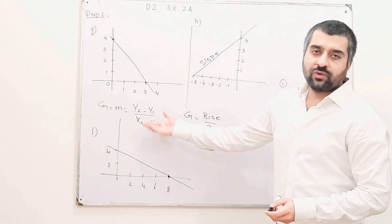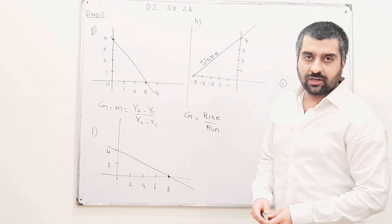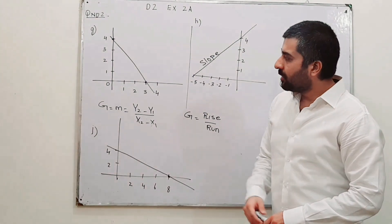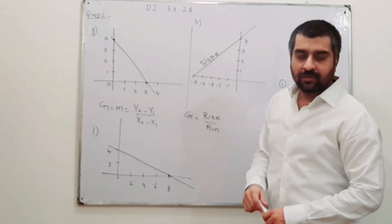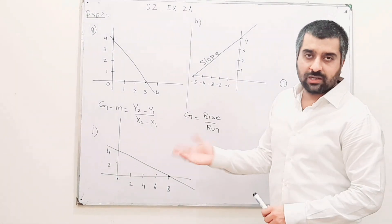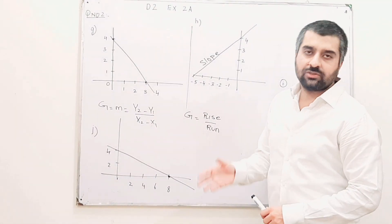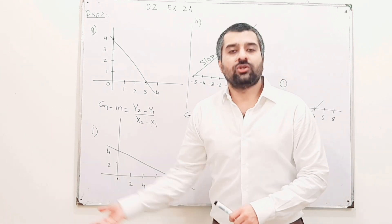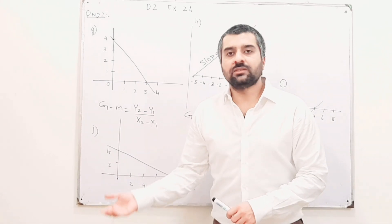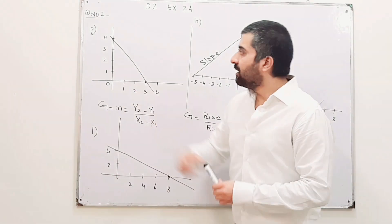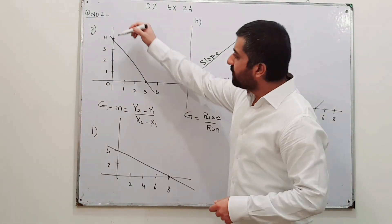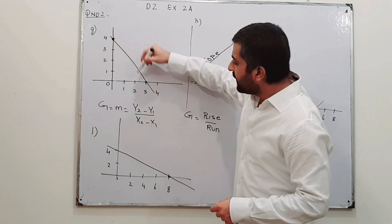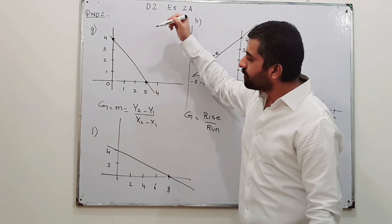Now, how to find the gradient of a line? You have to take two points on a line — that is your choice, wherever you want to take the points. So I have taken two points: one point over here and the second point over here.